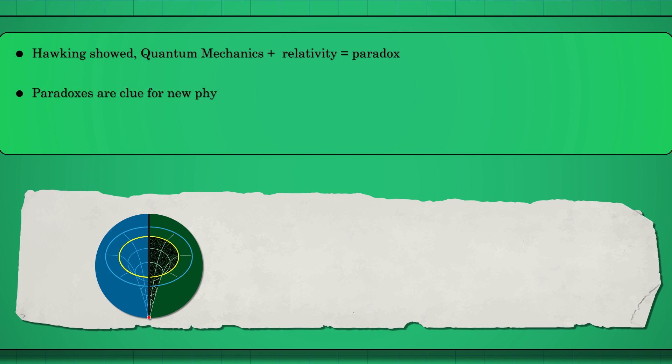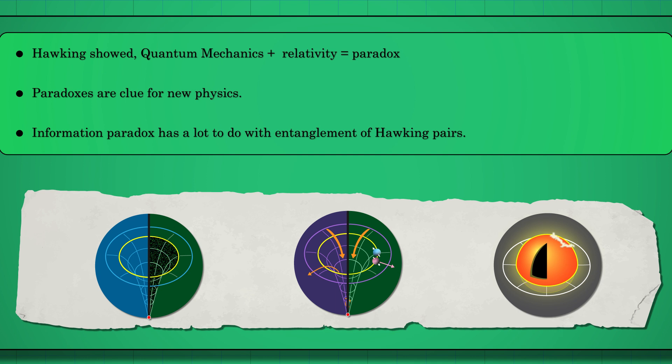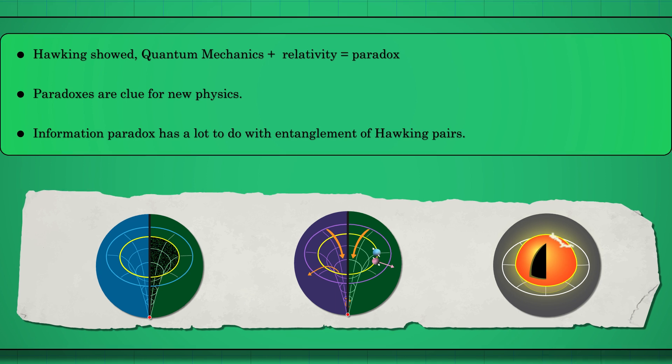Paradoxes like this are valuable clues for new physics, indicating that our current understanding is incomplete and pointing the way to potential breakthroughs. The information paradox is closely related to the entanglement of Hawking pairs. Understanding this entanglement structure could be the key to resolving the paradox.